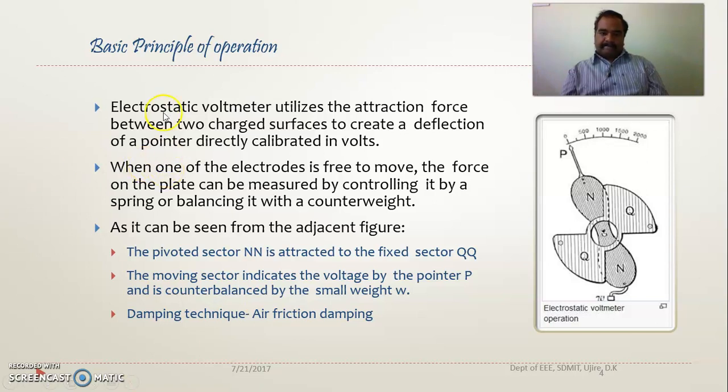The electrostatic voltmeter utilizes the attraction force between two charged surfaces to create a deflection of the pointer directly calibrated in volts. When one of the electrodes is free to move, the force on the plate can be measured by controlling it with a spring or balancing it with a counterweight. These two are the plates, Q2 is one plate and N is another plate, to which there is a pointer P which shows it on the scale.